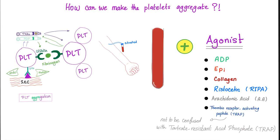How do we make the platelets aggregate? First, you get a blood sample from the patient, preferably in a blue top tube because it contains sodium citrate — a citrated blood sample. Then you add an agonist to the blood sample, such as ADP, epinephrine, collagen, ristocetin, arachidonic acid, and even thrombin receptor activating peptide, or TRAP — not to be confused with tartrate-resistant acid phosphatase, which is also abbreviated TRAP.